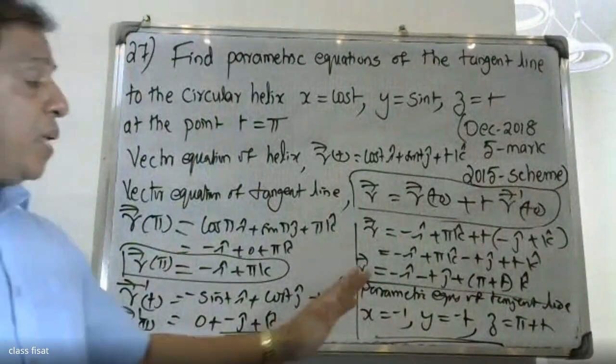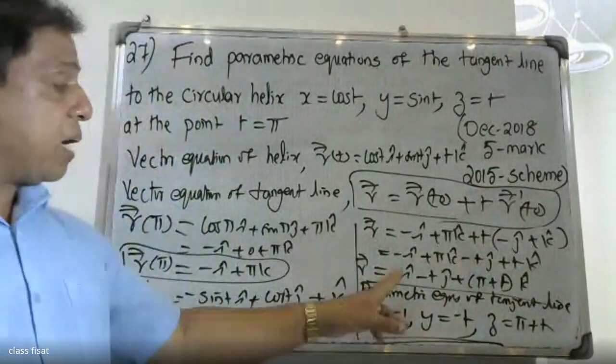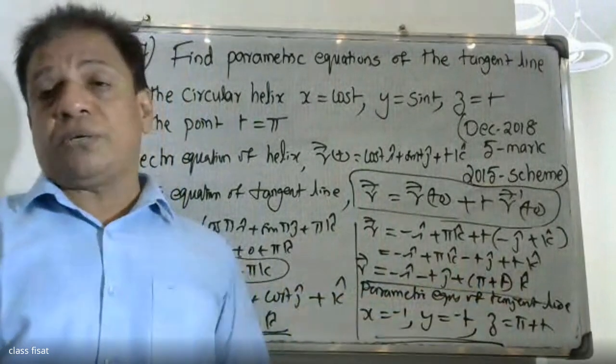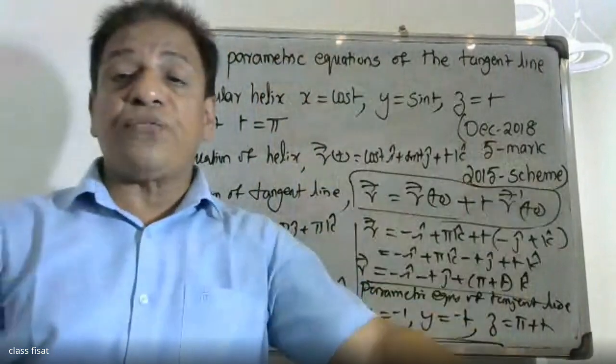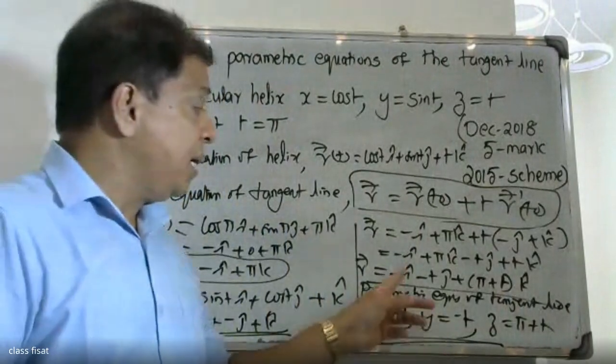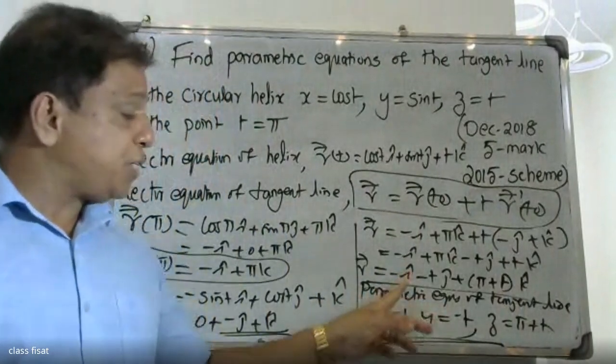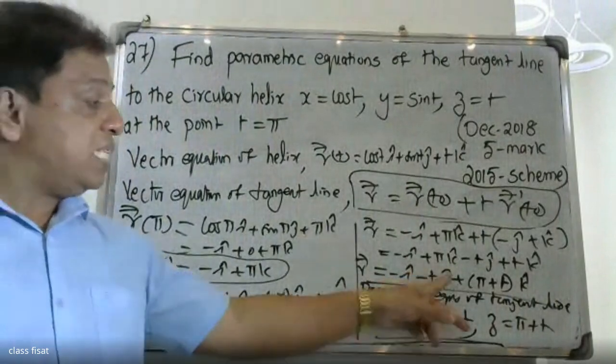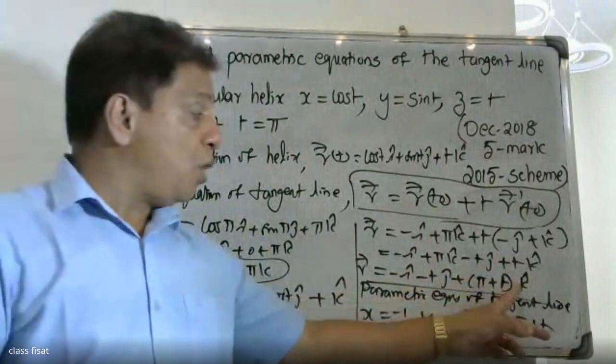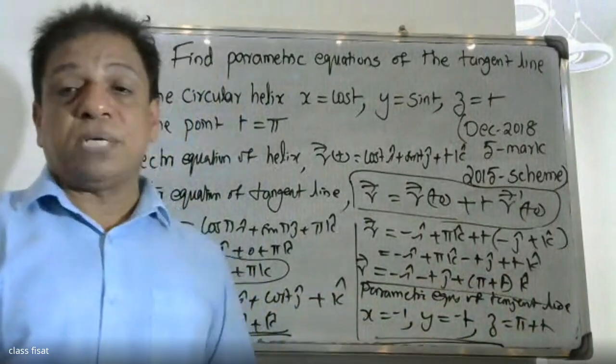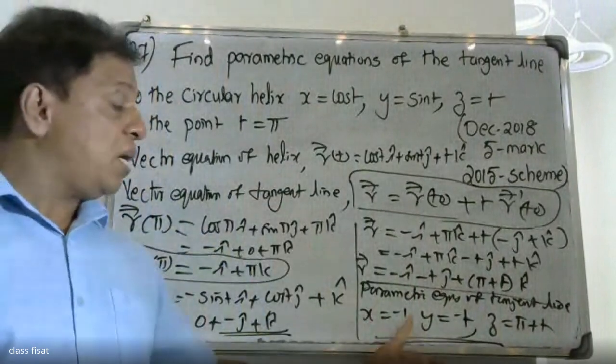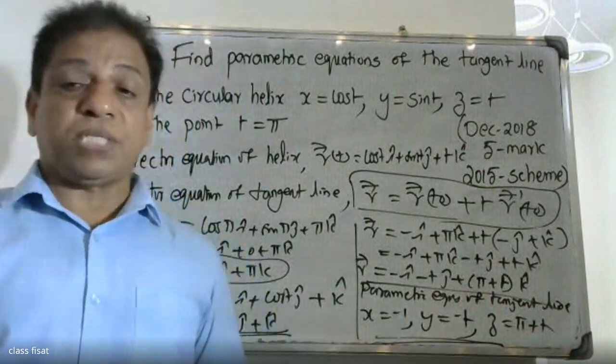After simplifying, the parametric equations are: the coefficient of i gives x equals minus 1, coefficient of j gives y equals minus t, coefficient of k gives z equals π plus t.